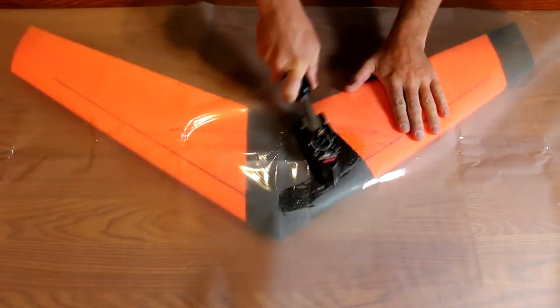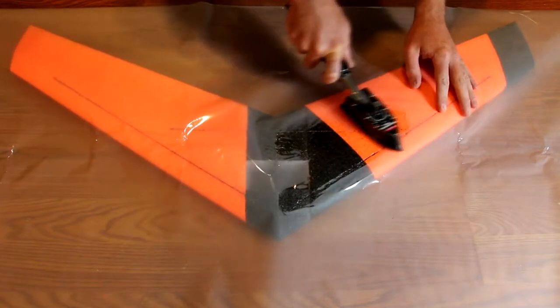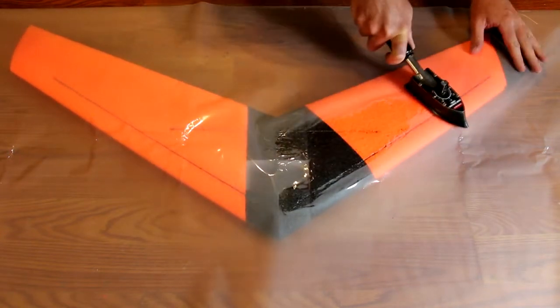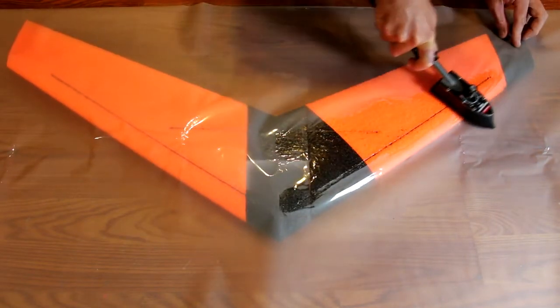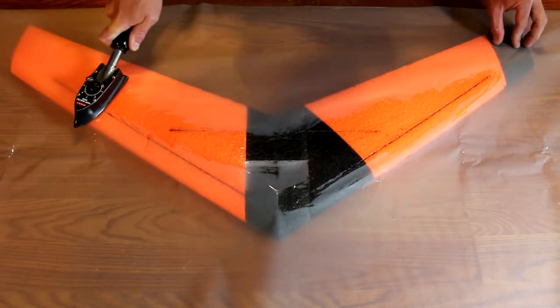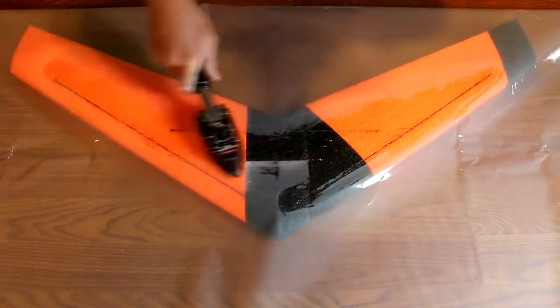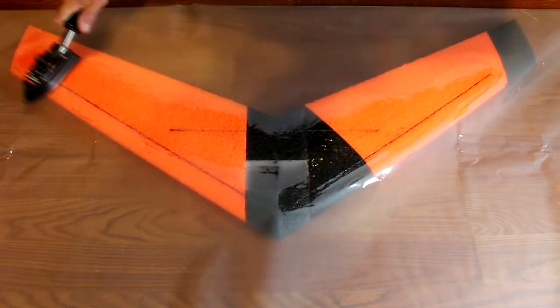The next step is laminating the airplane. Place the laminate over either the top or the bottom, and then using a covering iron or a clothing iron set to approximately 240 to 250 degrees Fahrenheit, work from the center of the airplane out towards the tips, stretching the film as you go. I find it's best to start in the middle and work my way towards the edges to avoid wrinkles.